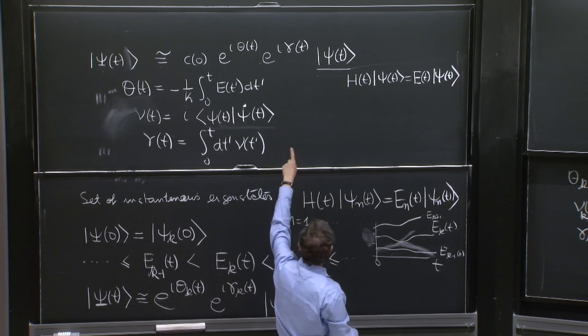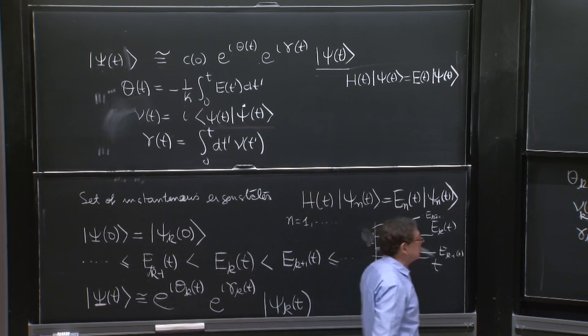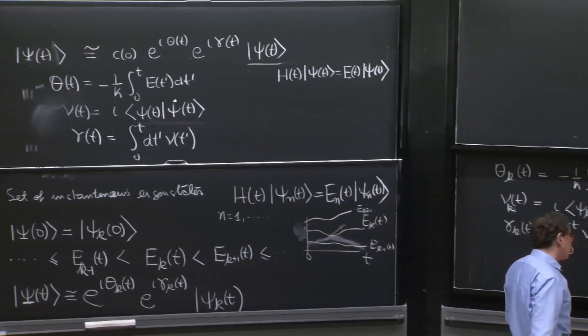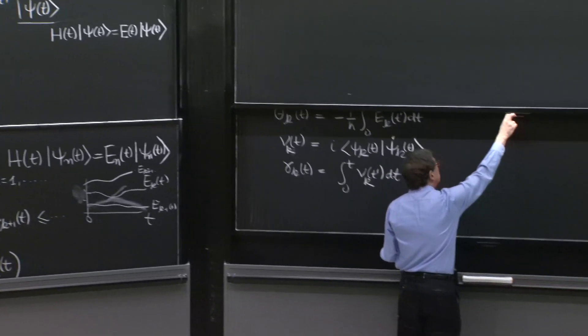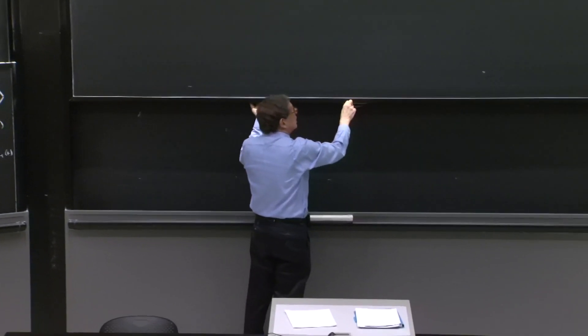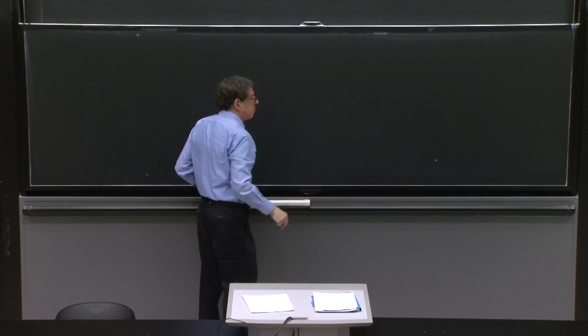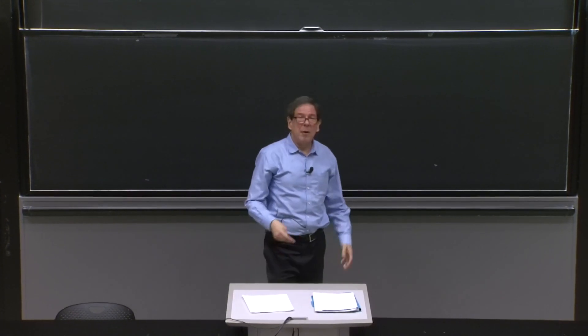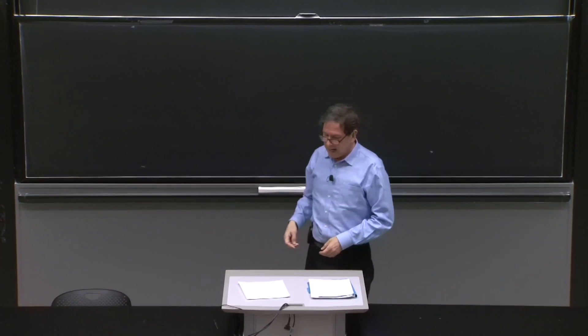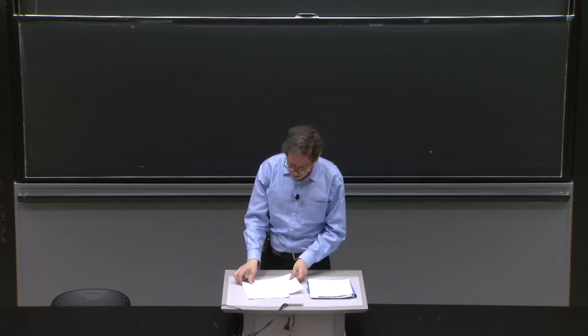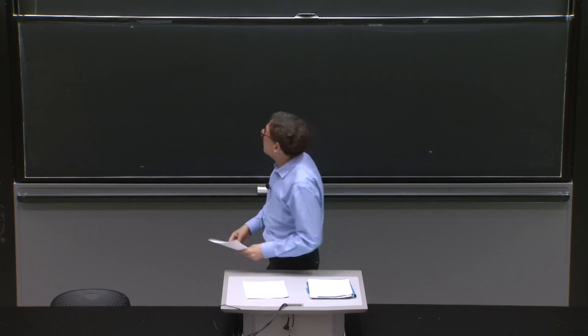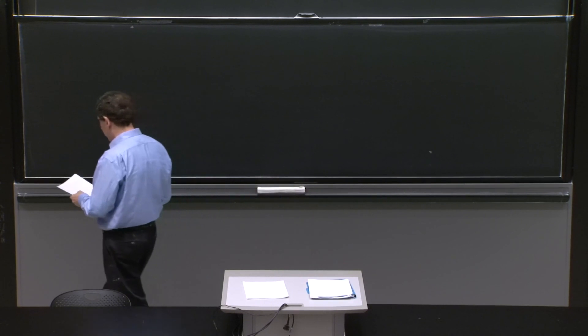And we found those are the phases that came close to satisfying the Schrödinger equation, but not quite. So in order to do this under a more controlled approximation, let's do a calculation where we put all the information in.